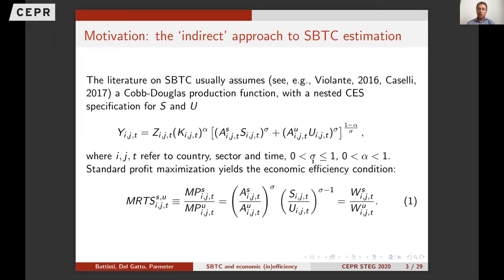This holds only if we don't need perfect labor market competition, but we do need symmetric labor market competition. As I will show in a few minutes — and as acknowledged in the literature — the imperfection should be neutral between skilled and unskilled in order to run this kind of equation.